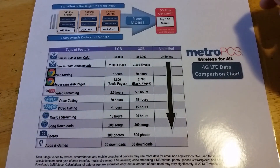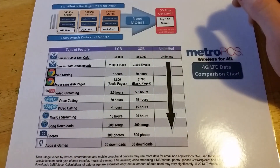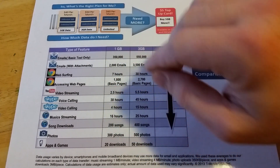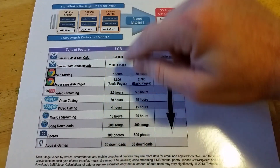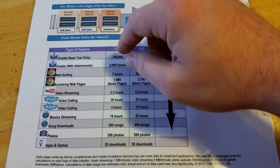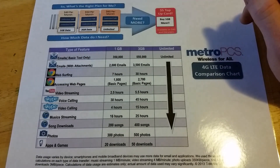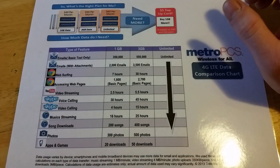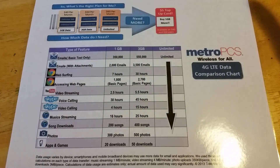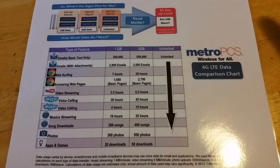Let's go to the breakdown. For 1GB, I want to just explain first — you don't get everything in the column, you get one of the things in the column. So basically, if you're going to use 350,000 emails in a month, you're going to use that 1GB of data with only your emails.